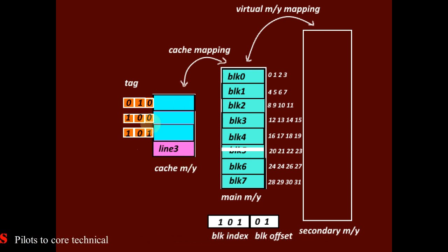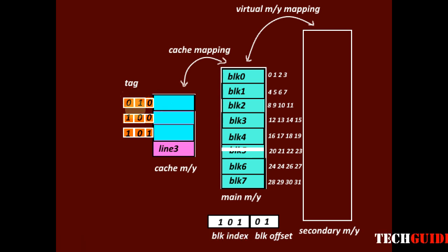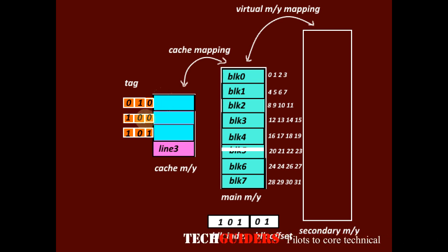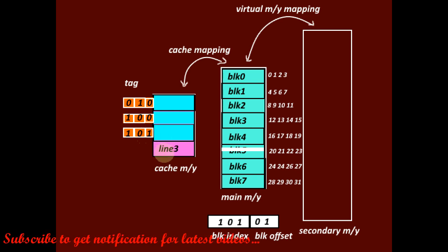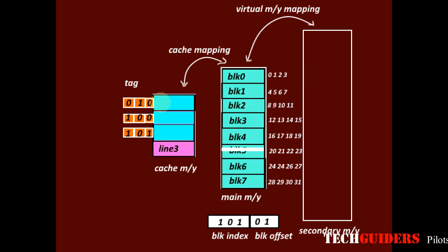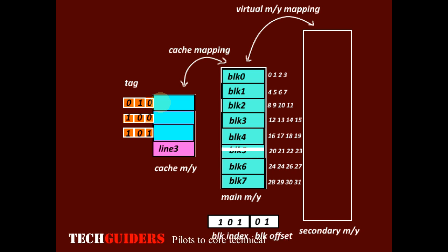After this operation, cache line 0 has block 2, cache line 1 has block 4, cache line 2 has block 5, and cache line 3 is still free. If all cache lines are occupied when we need to bring a new main memory block to the cache, we must choose a proper replacement strategy.